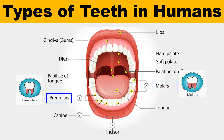The second type of teeth are molars. These are the largest and strongest teeth. They have a large and flat biting surface which is well adapted for grinding food. Humans have 12 molars, six in each jaw. Four of those are wisdom teeth, also called the third molar, which come in between the ages of 17 to 25.